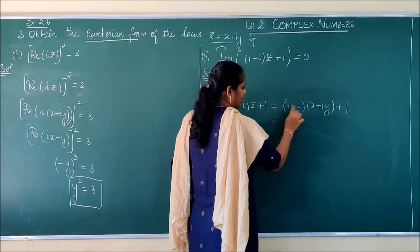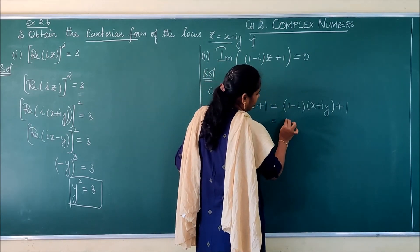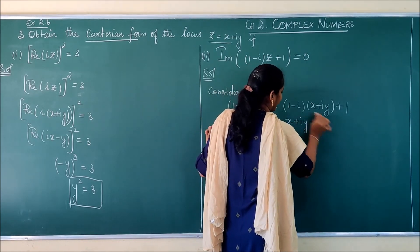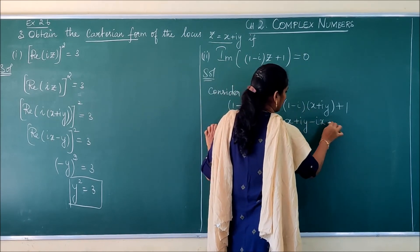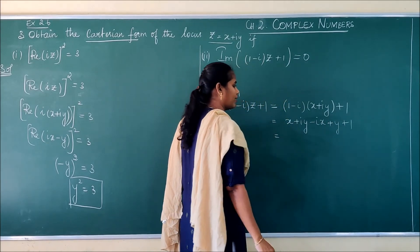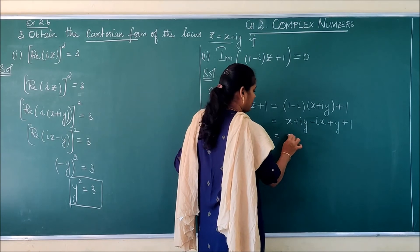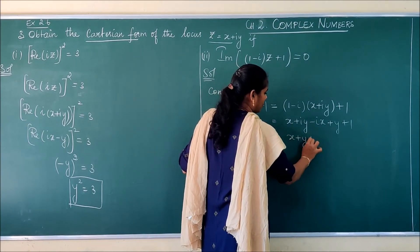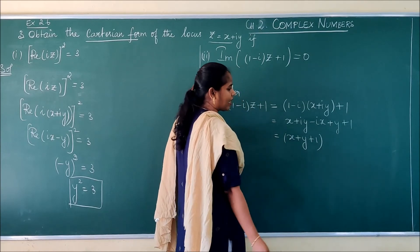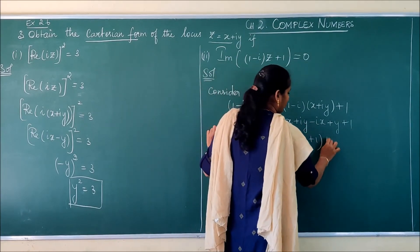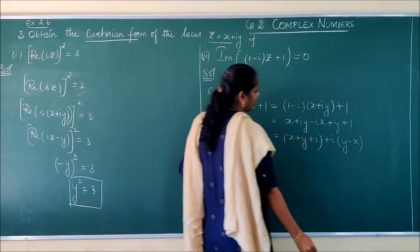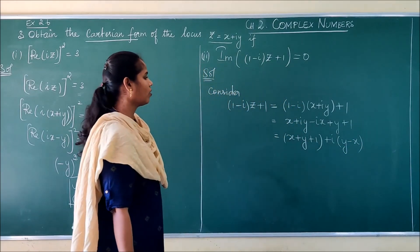Just I am going to multiply as usual: x plus iy minus ix plus y plus 1. I am going to group this into real and imaginary parts. My real part is x plus y plus 1, since the value without i is the real part. And y minus x is my imaginary part.